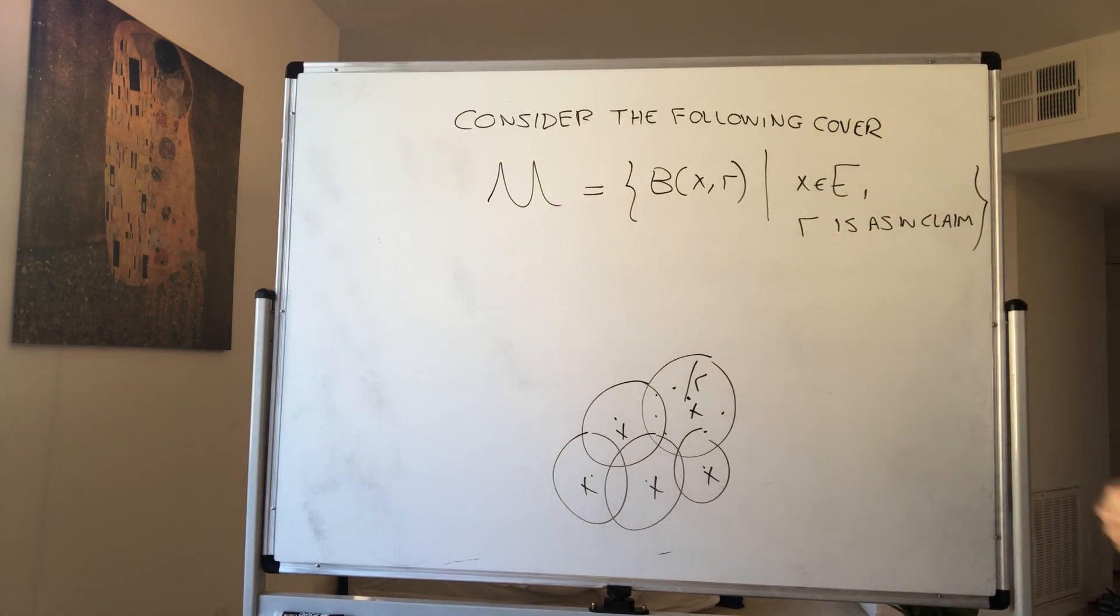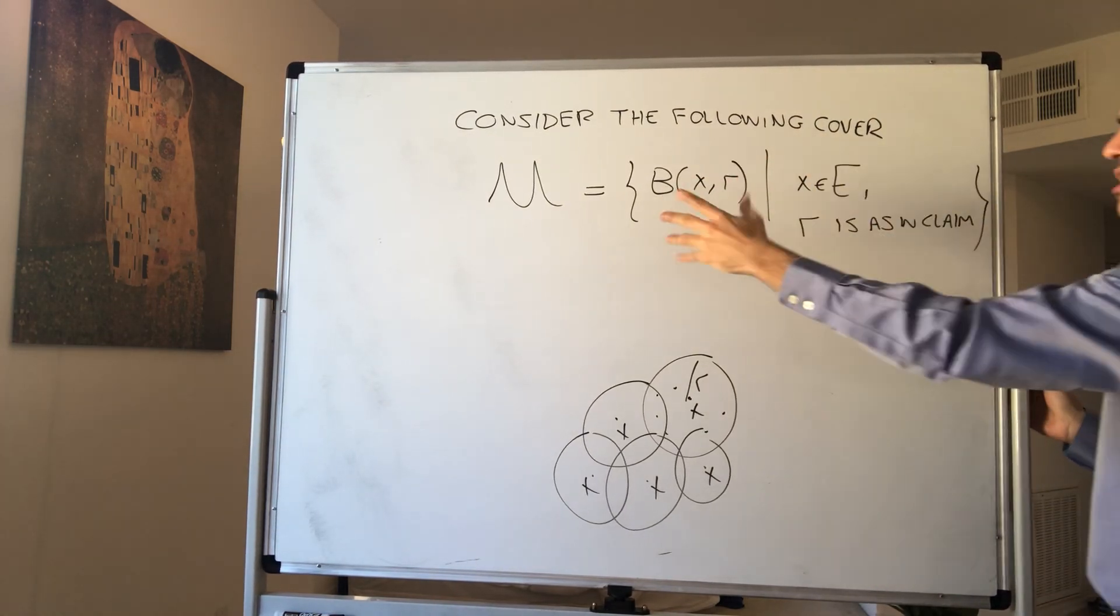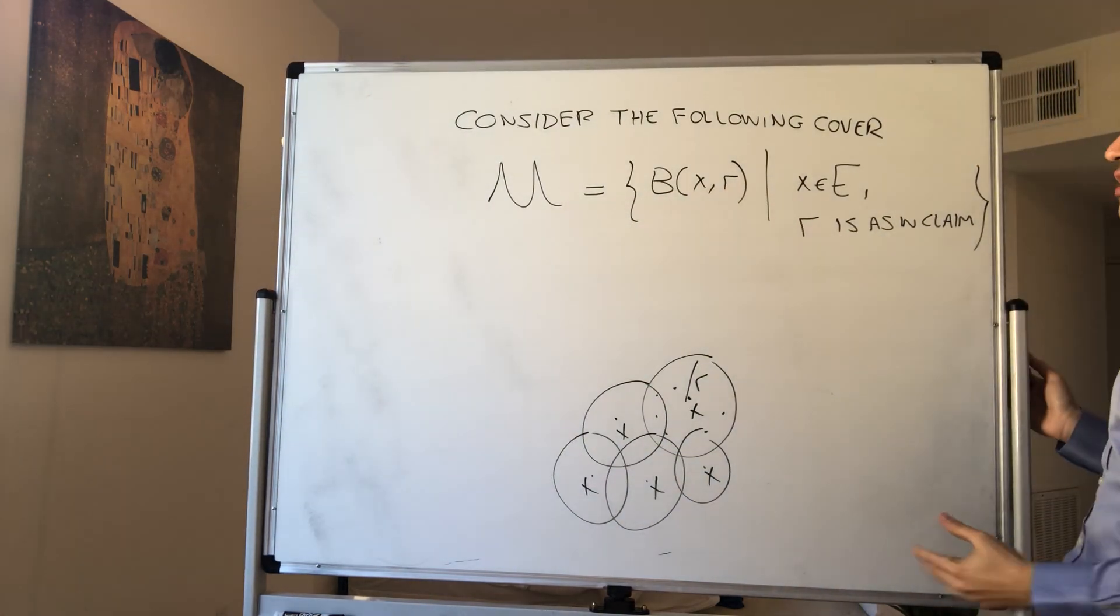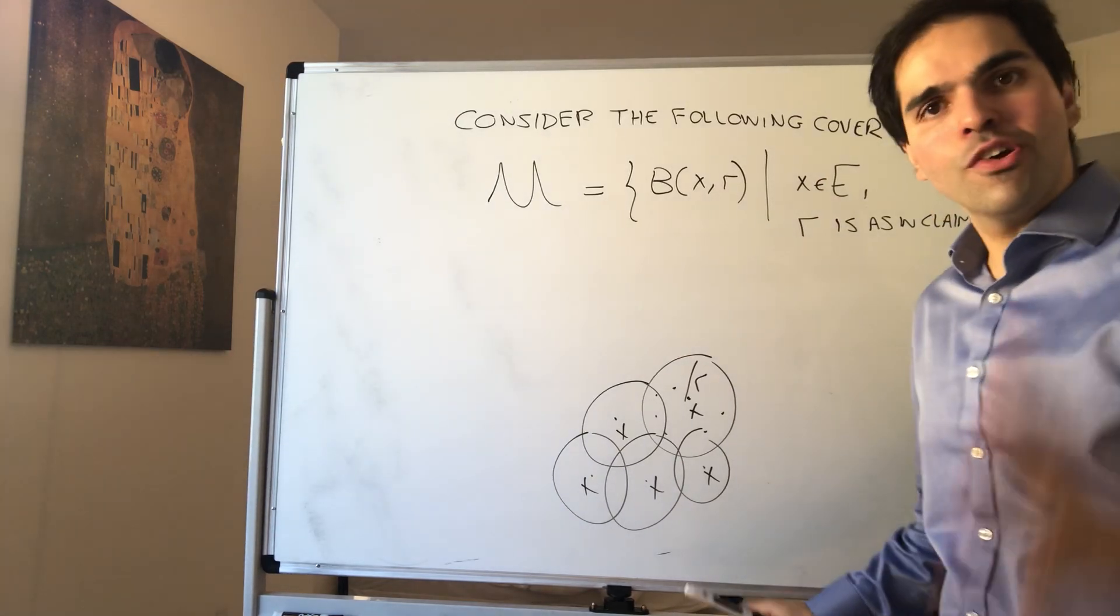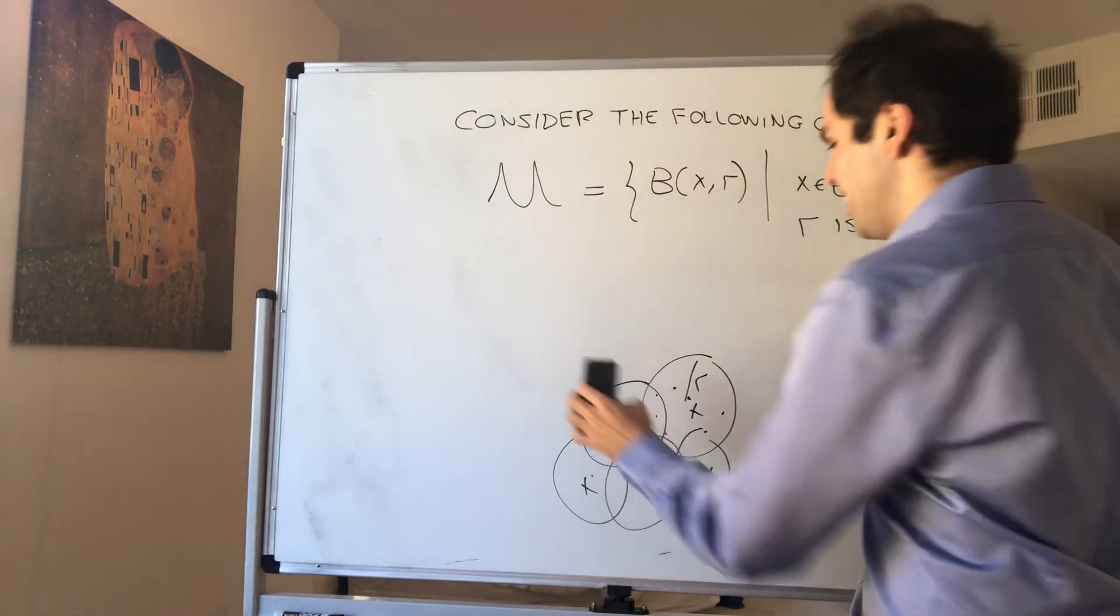Well, because X ranges over every element in E, U is a cover of E, balls are open, so in fact it's an open cover, so bang, there's a finite subcover.